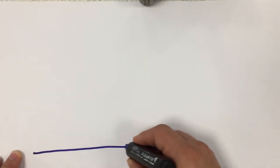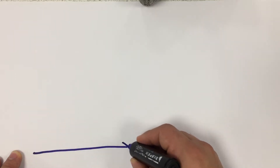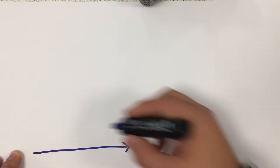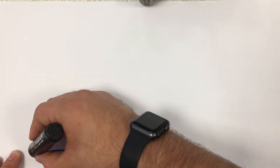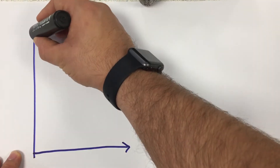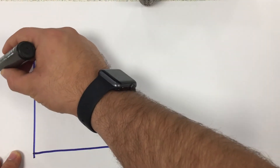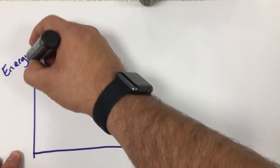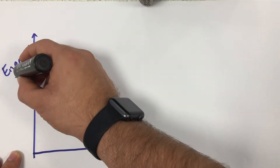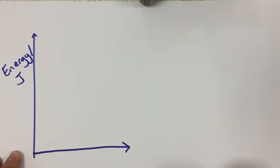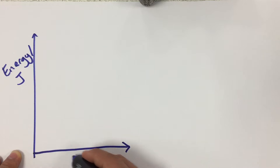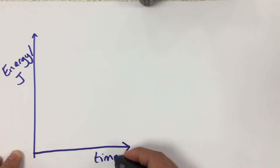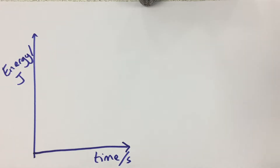We're going to have time along the bottom, or progress of the reaction, and up the y-axis we are going to have energy. The unit for energy is the joule, and time or progress of the reaction in seconds goes along the x-axis.